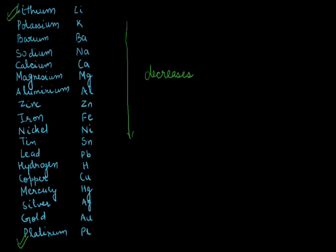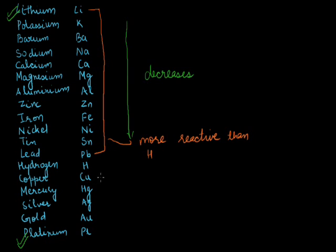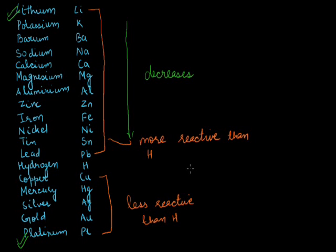The metals which are above hydrogen in the reactivity series are more reactive than hydrogen, while the metals which are below hydrogen in the reactivity series are less reactive than hydrogen. The reason for different reactivity of different metals in the series is the tendency of metals to lose electrons. For example, lithium loses electrons more rapidly than potassium, and potassium loses electrons more rapidly than barium.